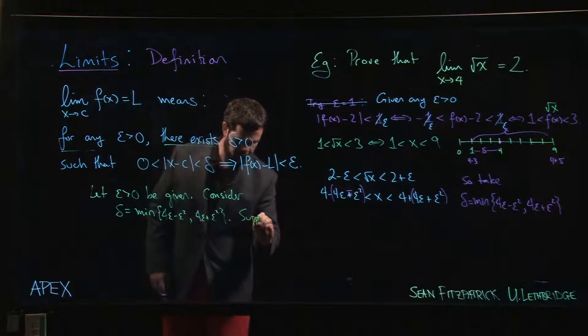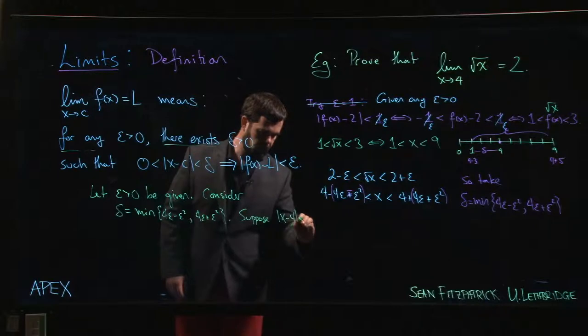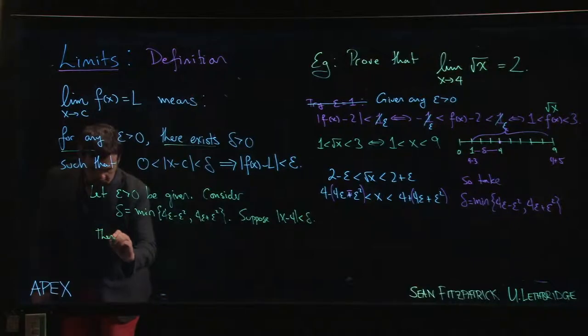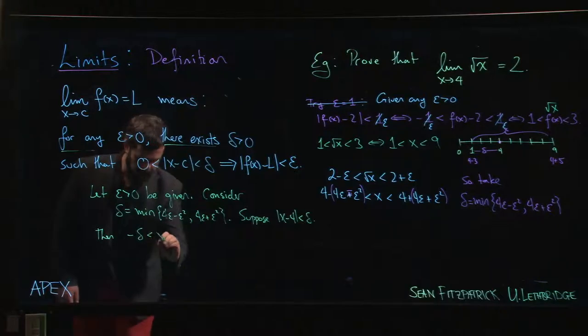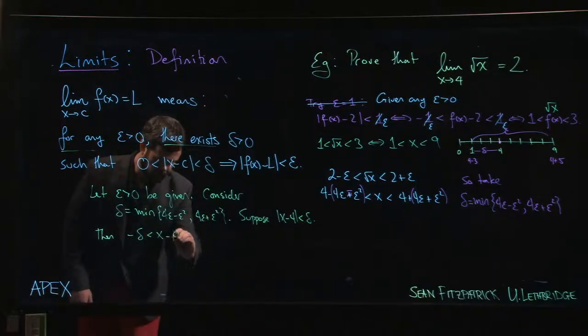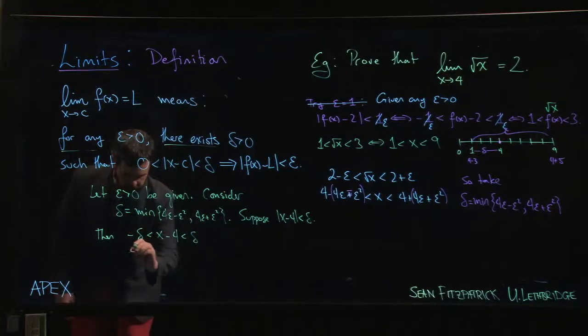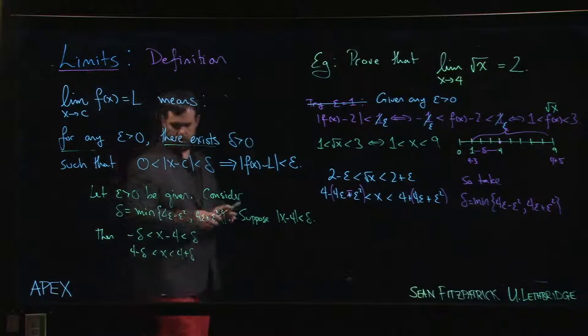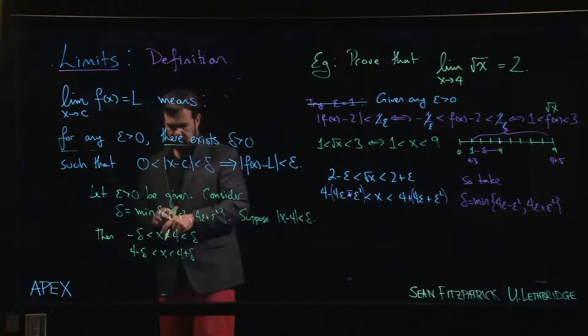Well, let's suppose that the absolute value of x minus 4 is less than delta. Then I know that minus delta is less than x minus 4, less than delta. So I know that 4 minus delta, so x is between 4 minus delta and 4 plus delta.